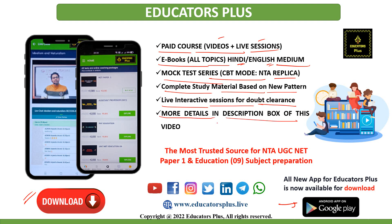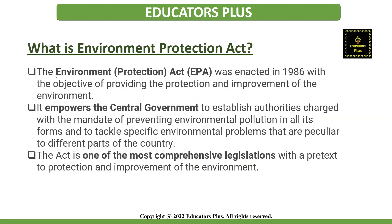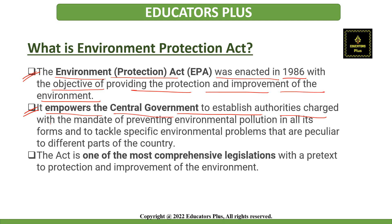Now let's start with the topic — the Environment Protection Act. The Environment Protection Act, EPA, was enacted in 1986. The main objective was to provide protection and improve conditions for the environment of the country. Basically, it empowers the central government to establish authorities and charge them with the mandate of preventing environmental pollution in all its forms, and to tackle specific environmental problems that are peculiar to different parts of the country. This Act is one of the most comprehensive legislation for the protection and improvement of the environment.